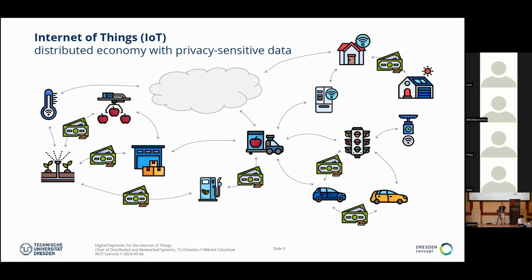In a lot of those cases, you actually have different actors involved. Usually, the owner of the gas station is not the owner of the truck bringing the apple to your fridge. So there is some form of distributed economy, and a lot of the data handled and things being paid for may be privacy-sensitive. You may not want other people to know what you're buying for your fridge, or that you're watering your plants right now.